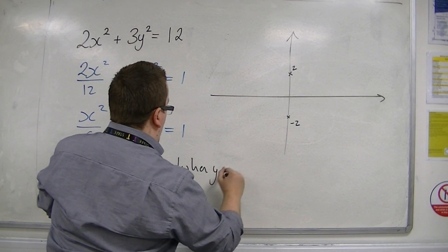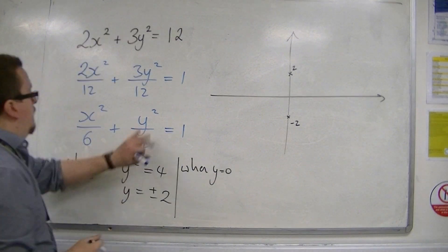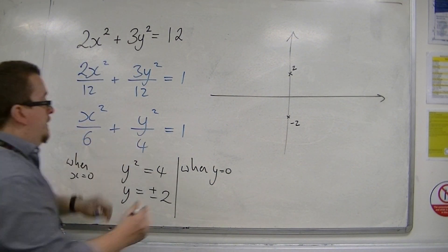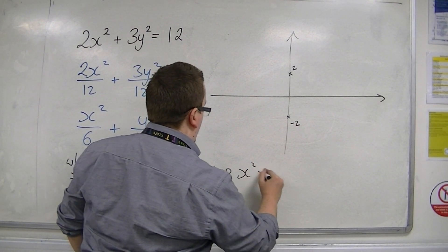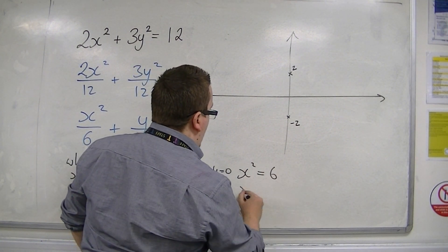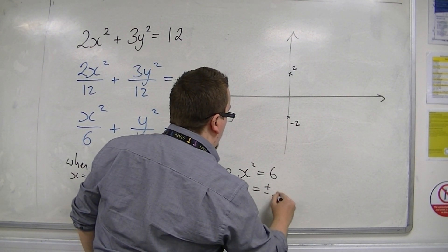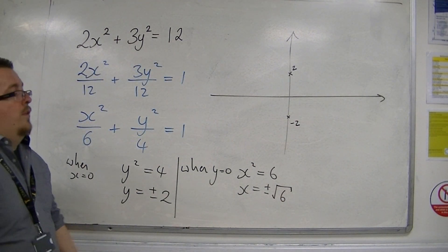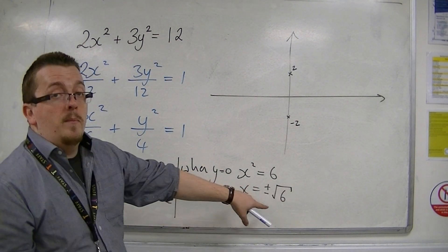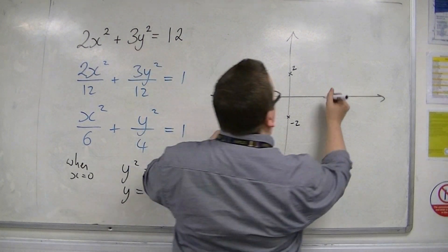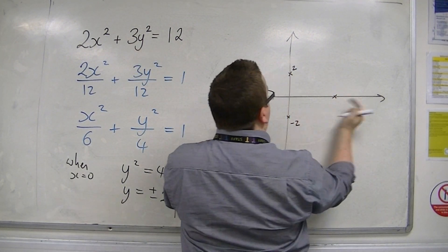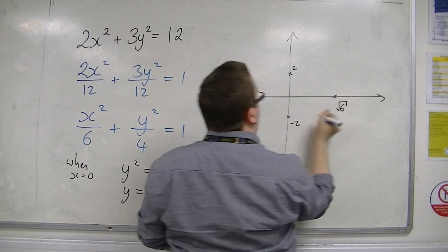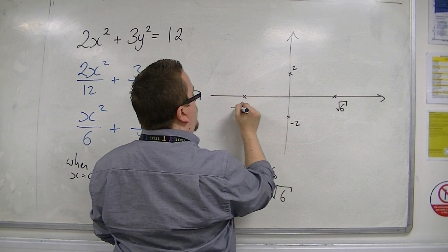So when y is 0, I'm going to get x squared is equal to 6. So x is equal to plus or minus root 6 — that's a little bit more than 2. So it's a little bit wider here because we've got root 6 and minus root 6.